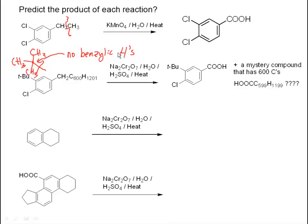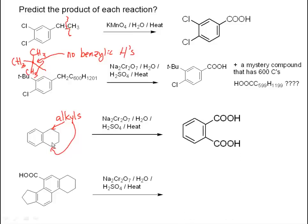That produces a carboxylic acid at that position. In the next case, the benzene ring is fused to another ring — we should just see these two ring residues as alkyls. When we do this oxidation, we're going to get the dicarboxylic acid shown here.